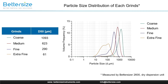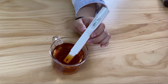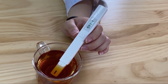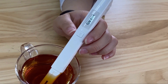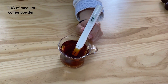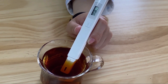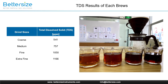The results demonstrate the ability of the BetterSize 2600 in monitoring the particle sizes of ground coffee. To more closely examine the extraction level of brewed coffee from different grinds, we measure each brew's total dissolved solids level. If the TDS number is higher, it indicates that more soluble contents in the coffee bean are extracted into the brewed coffee. As shown in the table, TDS values increased as grinds moved from coarse to fine ends. Finer coffee grinds produce brewed coffee with higher extraction, leading to a stronger flavor.